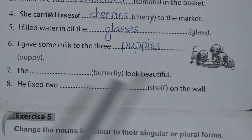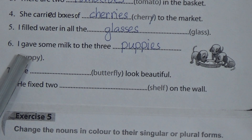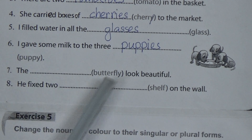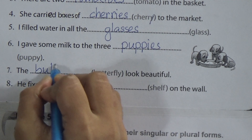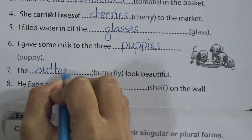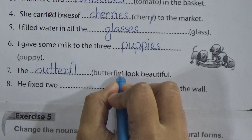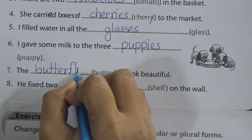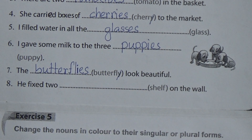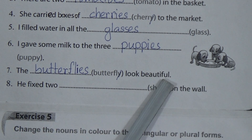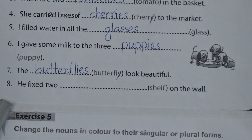Number seven: the _butterfly_ look beautiful. Just like puppy, the word butterfly ends in Y, so we drop Y and add IES to make it plural. It will be butterflies — B-U-T-T-E-R-F-L, drop Y, write I, then add ES. The butterflies look beautiful.